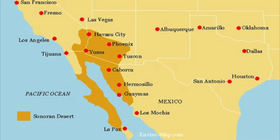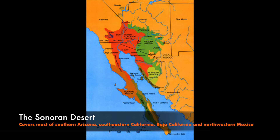The Sonoran Desert, as currently defined, covers approximately 100,000 square miles and includes much of the state of Sonora, Mexico, most of the southern half of Arizona, southeastern California, most of the Baja California Peninsula, and the islands of the Gulf of California.